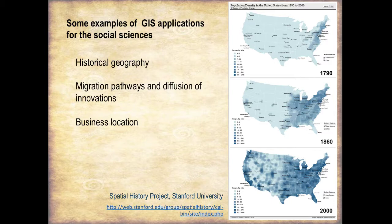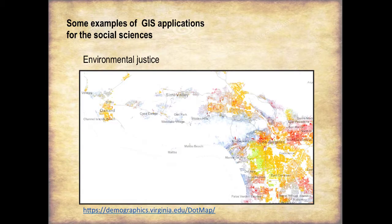In addition to viewing historic population trends, population distribution data can be used in a wide range of applications such as studies of migration pathways, diffusion of innovations, populations, and business location. Or, when viewed at a finer scale, as in this dot density map of Los Angeles and the surrounding area, population distribution data can be used for social and environmental justice studies.